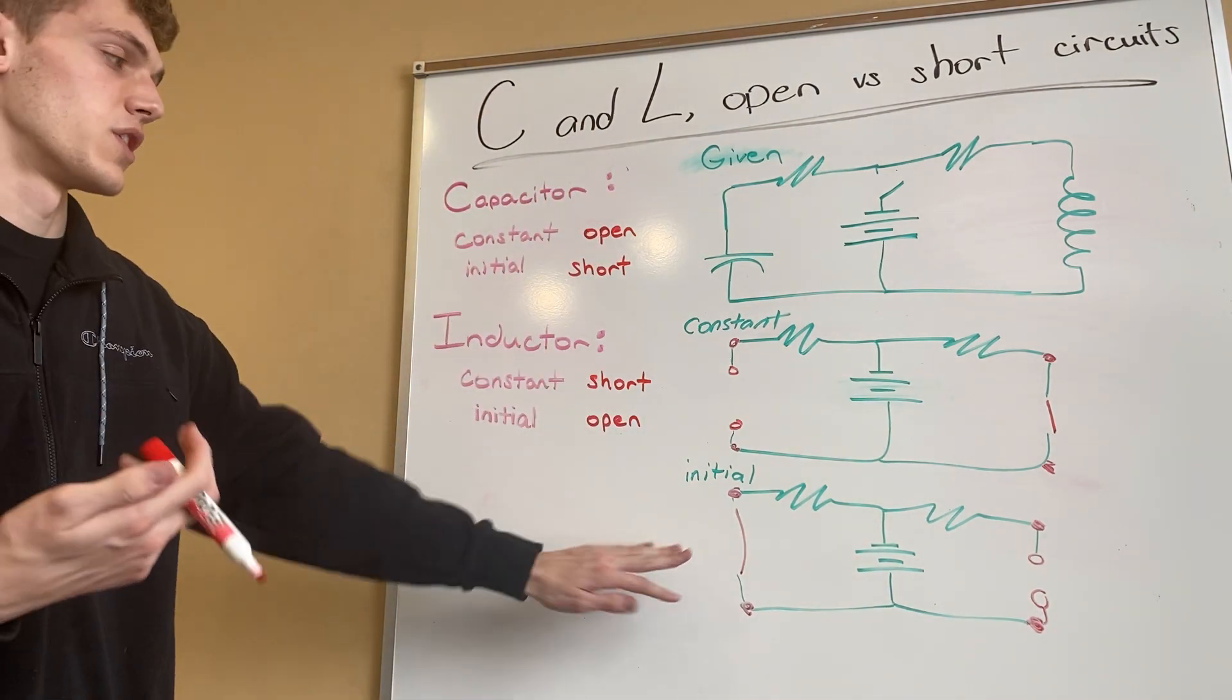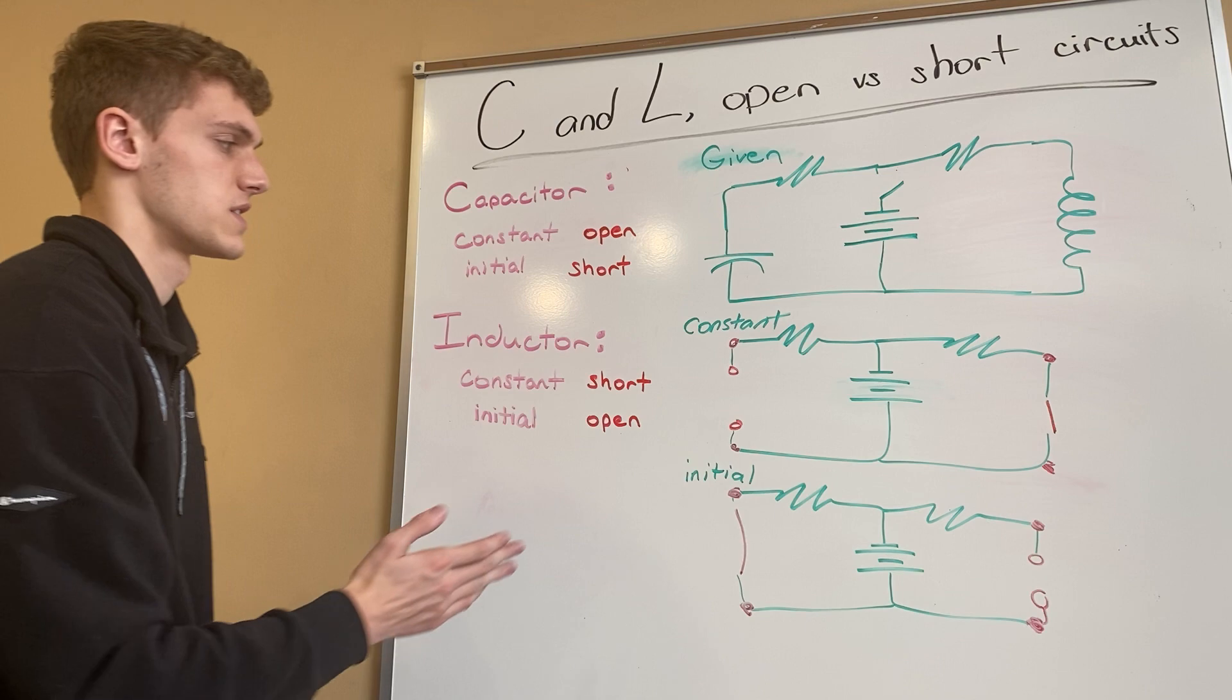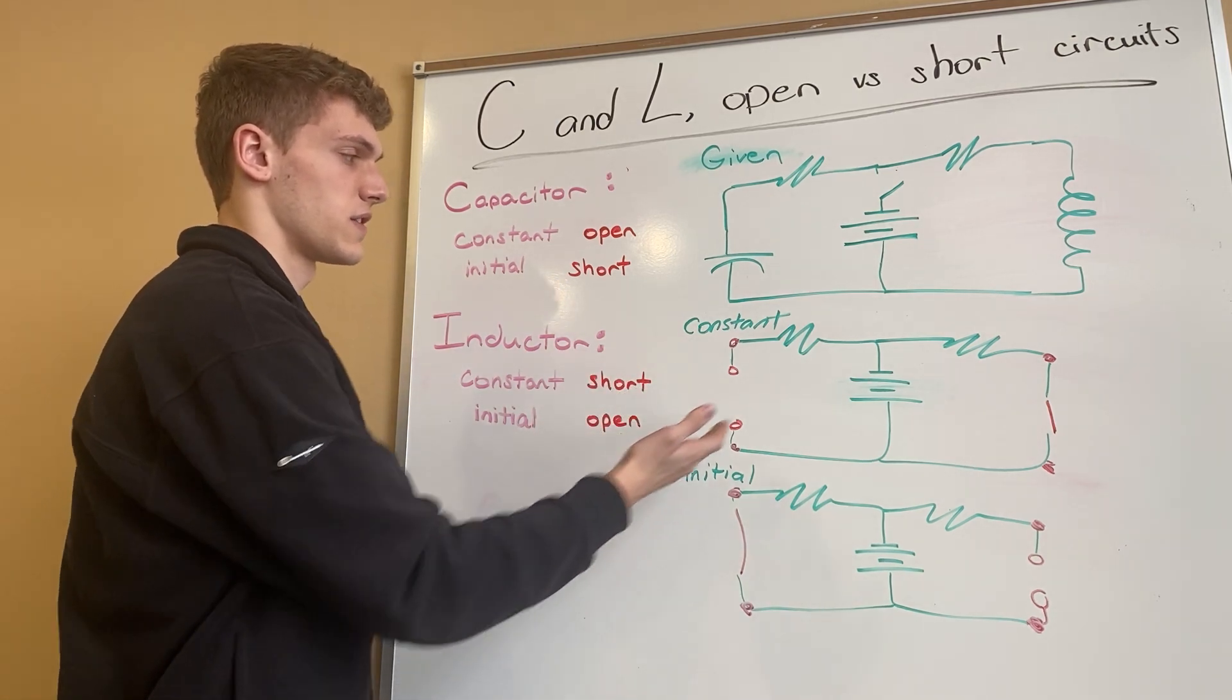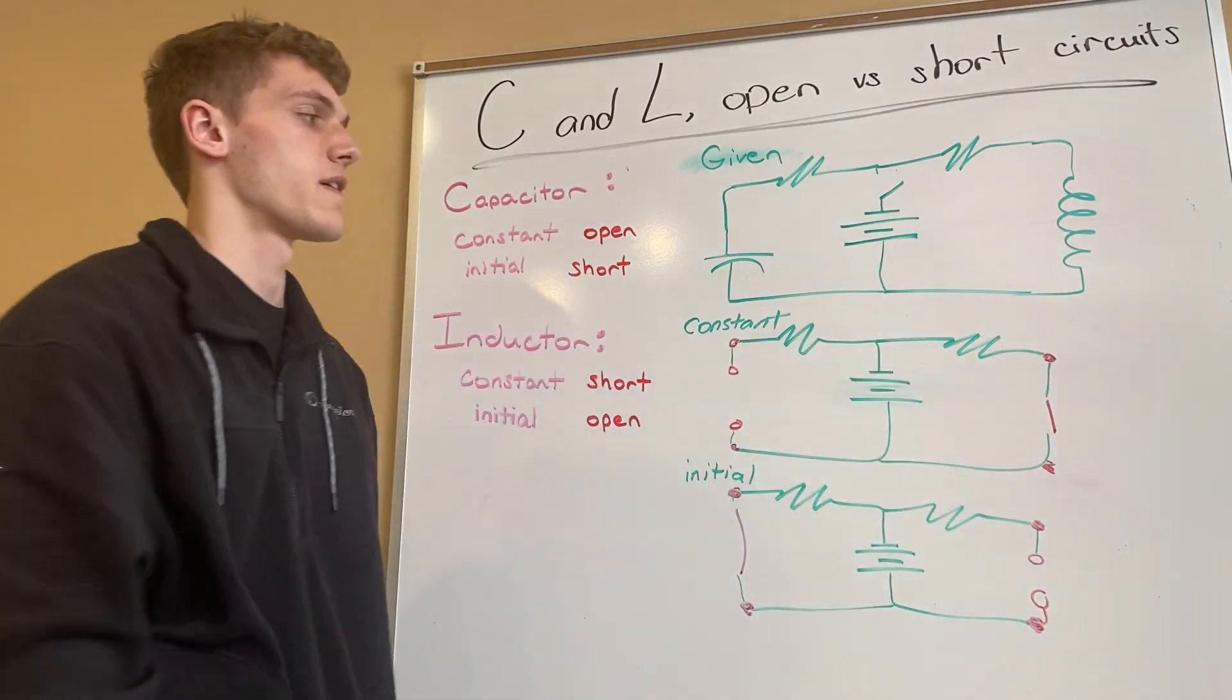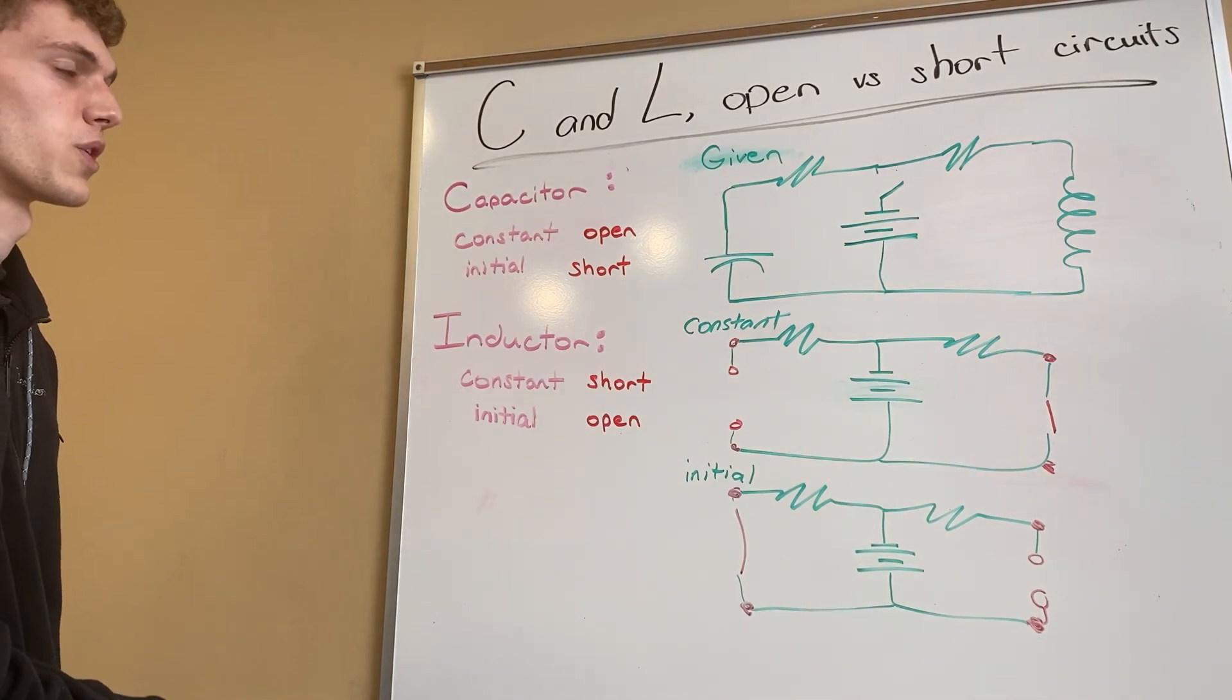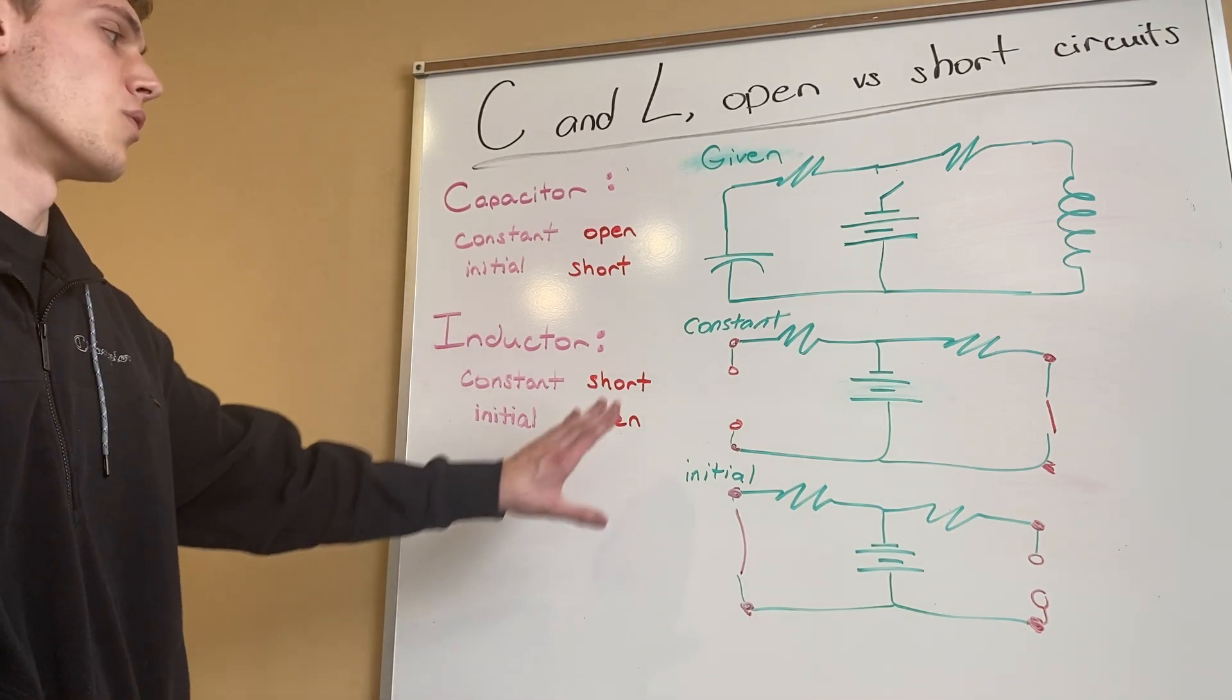This helps to simplify it a lot more actually because as you can see if we can eliminate one side as just an open circuit then there's no current flowing through that side. We don't even have to worry about that. Most of the time then our problem starts to deal with the other half of our circuit and that just helps simplify the problem down a lot more for us.